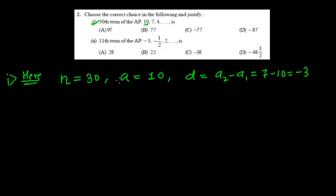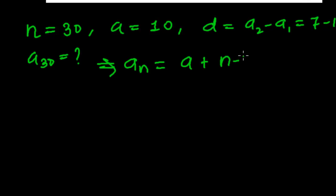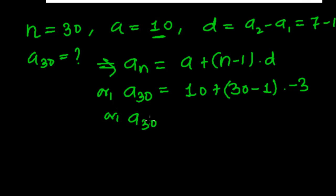So d is negative 3. Now we need the 30th term. a30 is what? We know the formula of the nth term: a_n equals first term plus (n minus 1) times the common difference. So a30 equals 10, the first term, plus 30 minus 1, times the common difference which is minus 3.